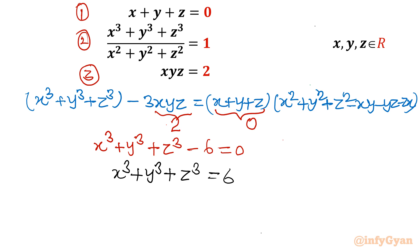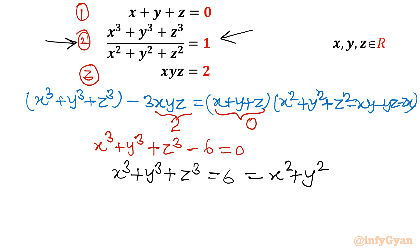From equation 2, we cross-multiply to conclude that x³ plus y³ plus z³ equals x² plus y² plus z². Since x³ plus y³ plus z³ equals 6, we have x² plus y² plus z² equals 6.